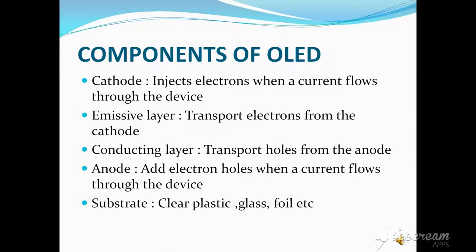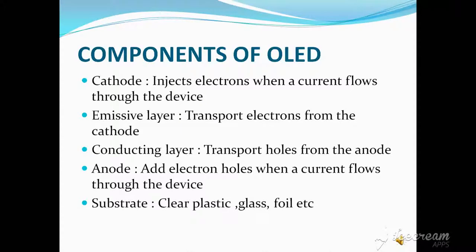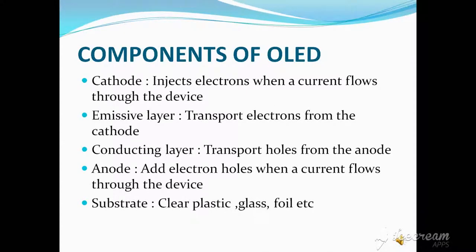The cathode injects electrons when a current flows through the device. The emissive layer transports electrons from the cathode. The conducting layer transports holes from the anode. The anode adds electron holes when a current flows through the device. The substrate supports the OLED — it may be clear plastic, glass, foil, etc.